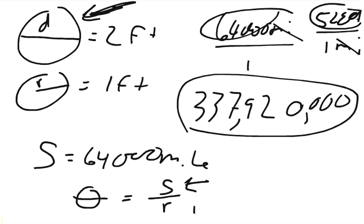So any number divided by 1 is that very same number. So the number of radians, the angle in radians, is equal to 337,920,000. So the feet in radians is the same number.